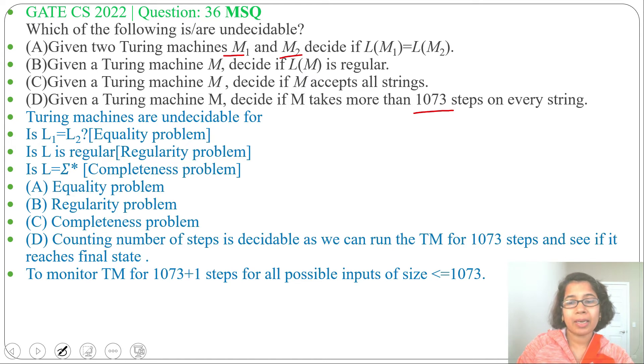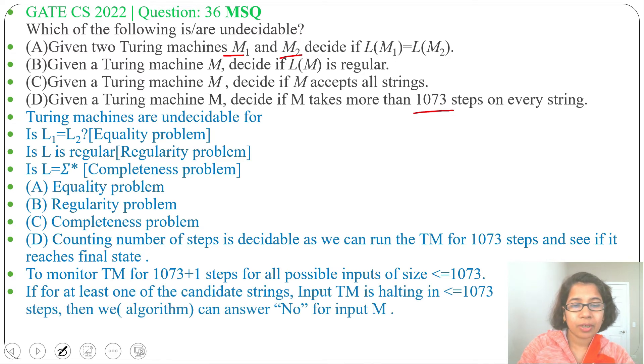If string lengths are less than 1073 and it is taking more steps than 1073, if for at least one of the candidate strings the Turing machine is halting less than or equal to 1073 steps, then the algorithm can answer no for input M. This means you can decide whether any string will halt on final state or non-final state by more than 1073 steps. As you can decide, as there are some algorithms to count the number of steps, this is decidable.